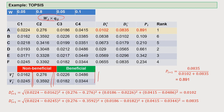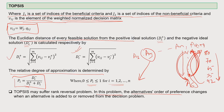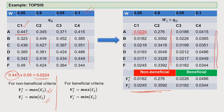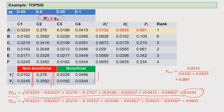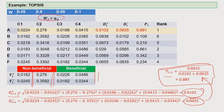We then compute the positive and negative ideal solutions — D_i-plus and D_i-minus. For the first alternative (i=1), using the distance formula we compute the D_i-plus value. Similarly we compute all D_i values — both positive and negative — and place them in the table under the respective criteria columns. These D_i values for positive and negative ideal solutions are then required to calculate the final P_i value.